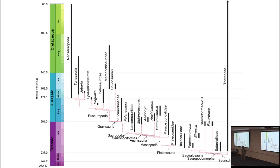Sauropodomorphs are by some metrics one of the most successful groups of dinosaurs, with really good representation throughout the Mesozoic. They are among the oldest dinosaurs in the record. These basal parts of sauropodomorphs show up relatively stepwise throughout the Triassic-Jurassic and fill up most of that space — there aren't a huge number of big gaps in their history.